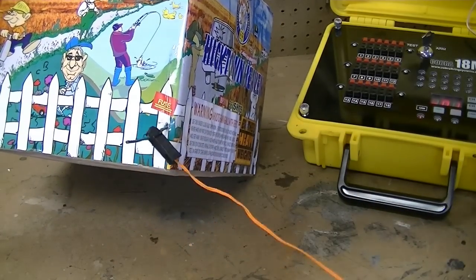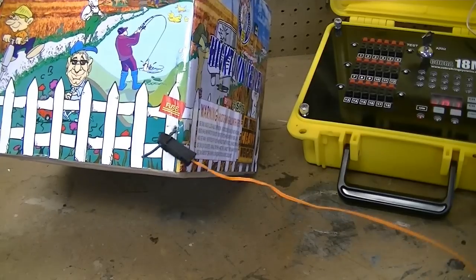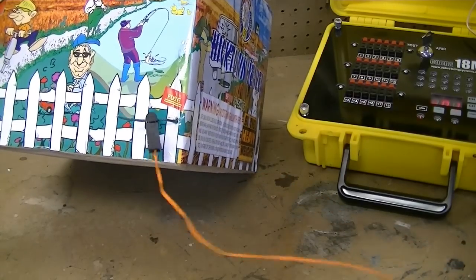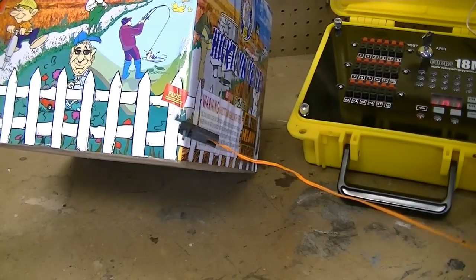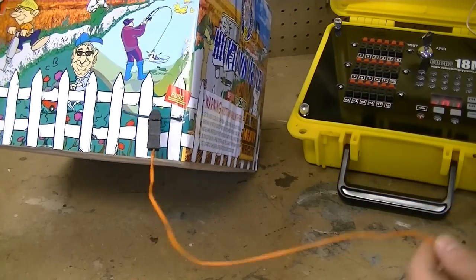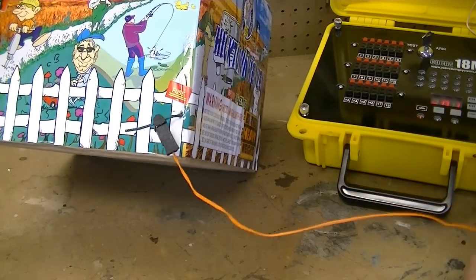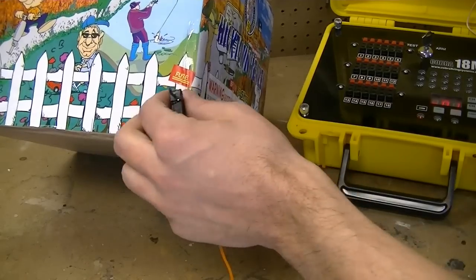Now one of the things that commonly happens out in the field is someone may kick this wire and cause this to come loose. What's bad about that is if it comes loose you're going to still show continuity on your firing system but when you fire it it's not necessarily going to ignite the cake.